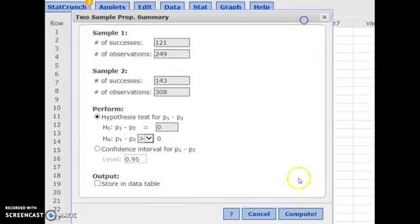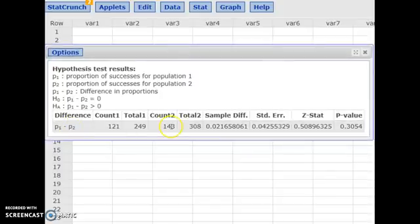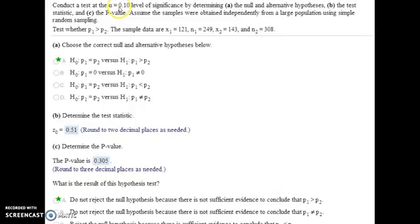When you hit Compute, StatCrunch will give you your Z statistic and the P value right away. The probability of getting the results we did or something even further to the right would be about 30%, so not very unlikely at all. Since our level of significance was just 10%, 30% is much bigger than that, so we will not reject the null hypothesis.